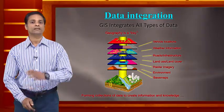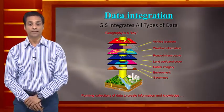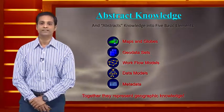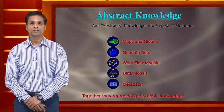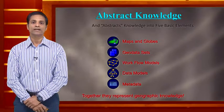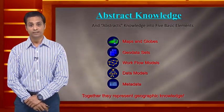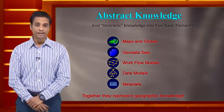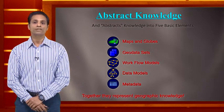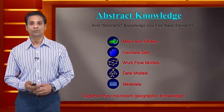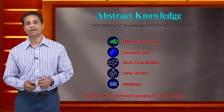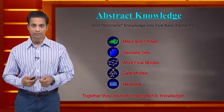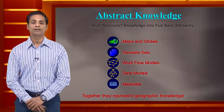GIS integrates all types of data across various layers. The five basic elements of GIS are: maps and globes (geographic province), geo-datasets storing information in XYZ coordinates, workflow models (such as a flood vulnerability indexing flowchart), data models (metadata — data within data, storing layered location details), and global accessibility allowing deployment by GIS professionals, developers, IT professionals, and end consumers.